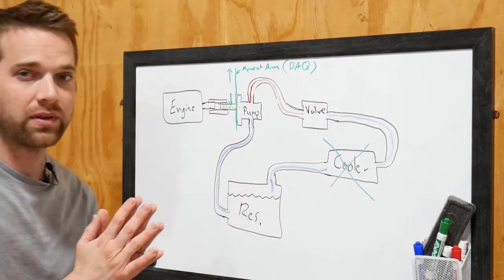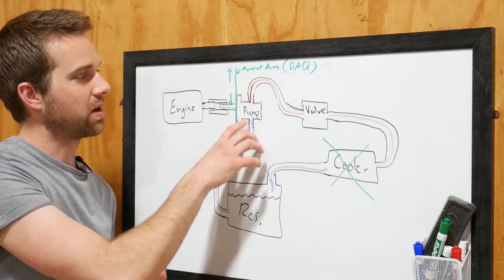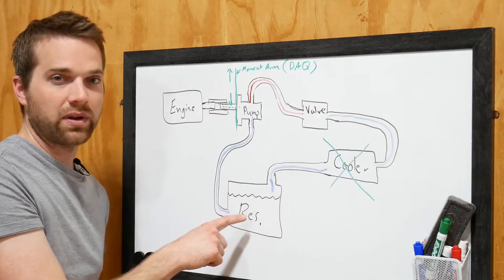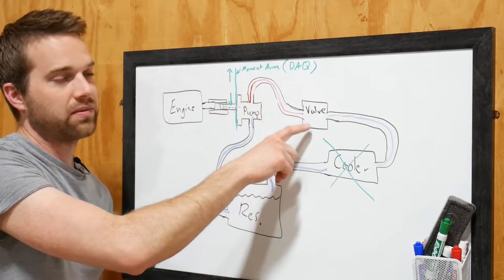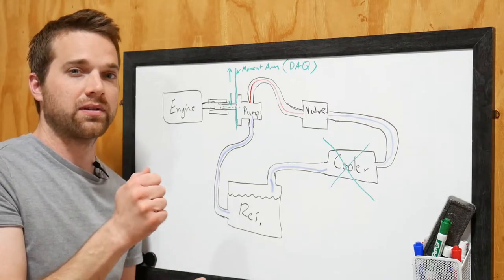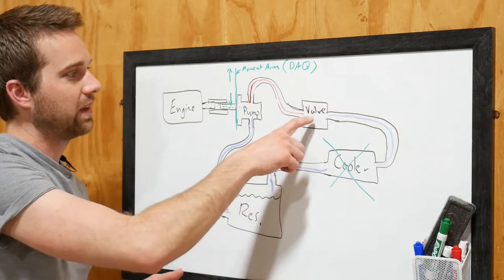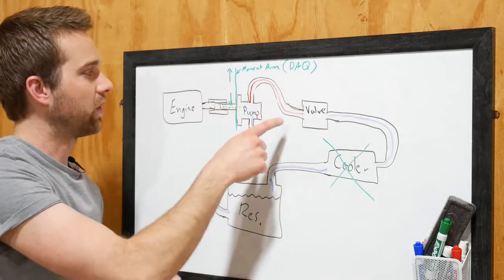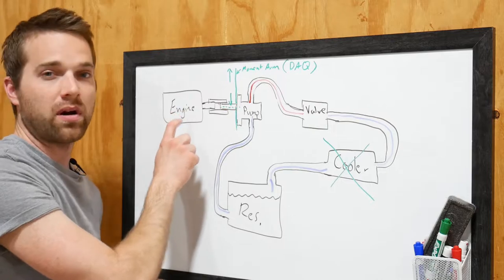So just kind of go through the components you have an engine and it's turning a pump. What the hydraulic pump is going to do is it's going to pick up oil from the reservoir. It's going to send it to a valve. Now this valve is going to be a flow control valve and as we restrict the flow control valve it's going to create pressure this red or hot spot is what's going to actually generate load on the engine.